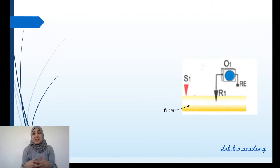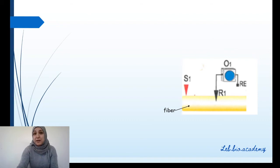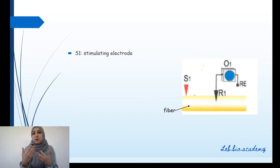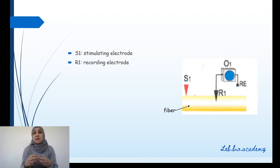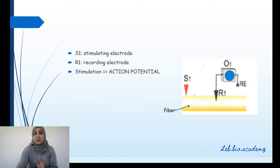As you can see in this picture, this fiber is connected to an oscilloscope to measure the difference in potential over time. I apply a stimulation to this fiber — a stimulation is a change that will lead to the appearance of a nervous message. S1 is the stimulating electrode and R1 is the recording electrode, which records whether there is an action potential or not. An action potential means there is a nervous message transmitting inside the nerve fiber.